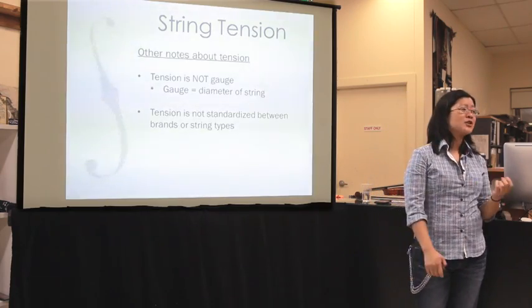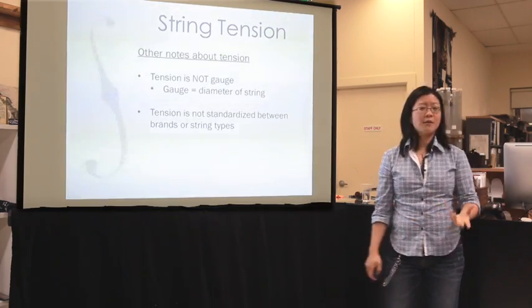The other thing to remember is that tension is not the same as gauge. Gauge is a very direct diameter measurement — a physical measurement of the string. That works when you're only talking about a solid steel core E string, but once you start adding materials of different density on top of it and different core types, you can have a very high tension string that's very thin, or a very low tension string that's very thick. So tension stops equaling gauge.